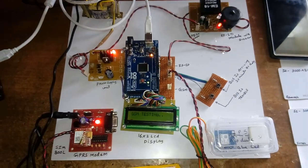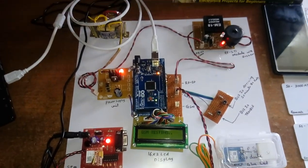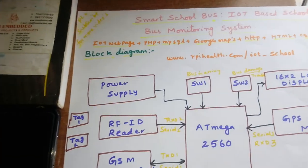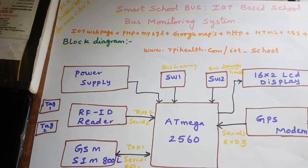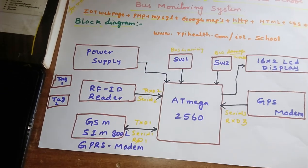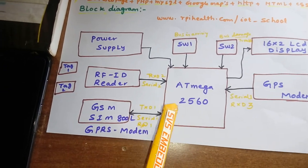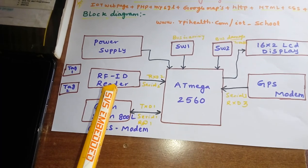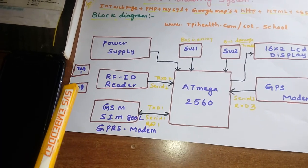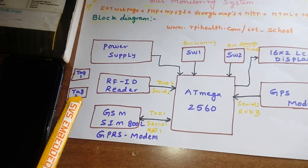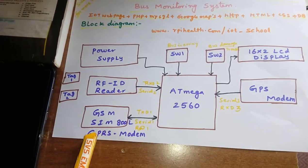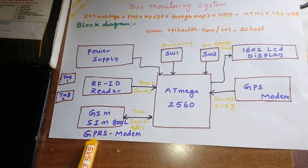Hi, we are from SvS. The project title is Smart School Bus - an IoT based school bus monitoring system. In this project I am using an Arduino Mega 2560, one RFID reader, and two RFID tags for school children named Ramesh and Suresh. We are also using a SIM800L GPRS modem.